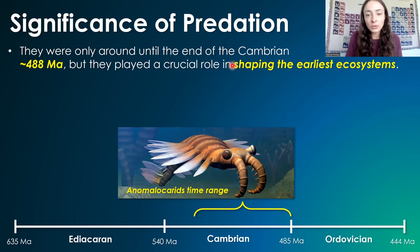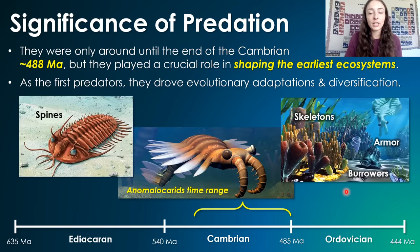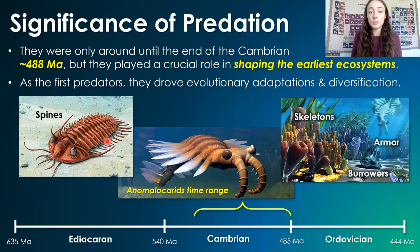But even with this relatively short time range, they played a crucial role in shaping the earliest and future ecosystems, even after they were gone. As the first predators, they drove critical evolutionary adaptations and diversification through causing pressure on prey organisms to evolve defense mechanisms like spines, hard parts, skeletons, shells, armor, burrowing abilities, and swimming faster.